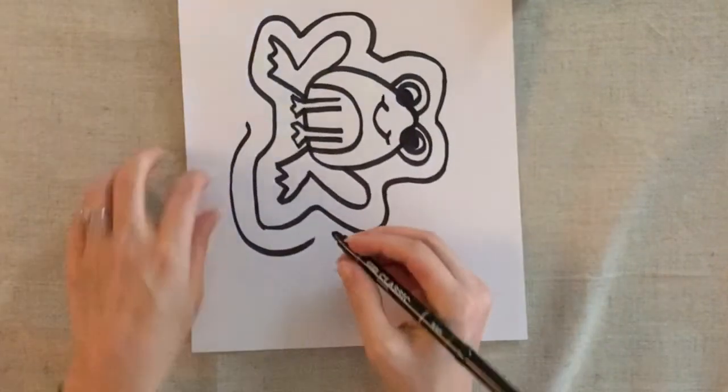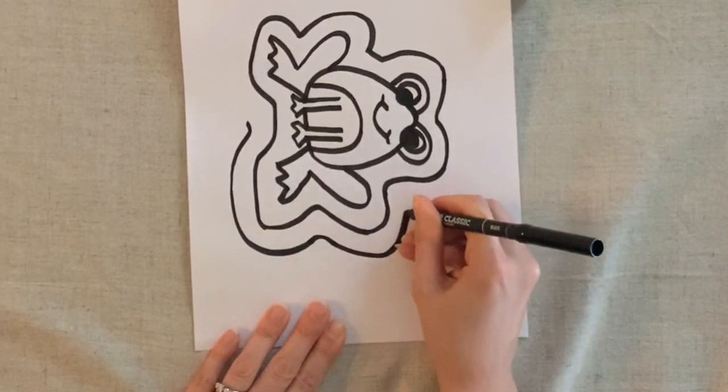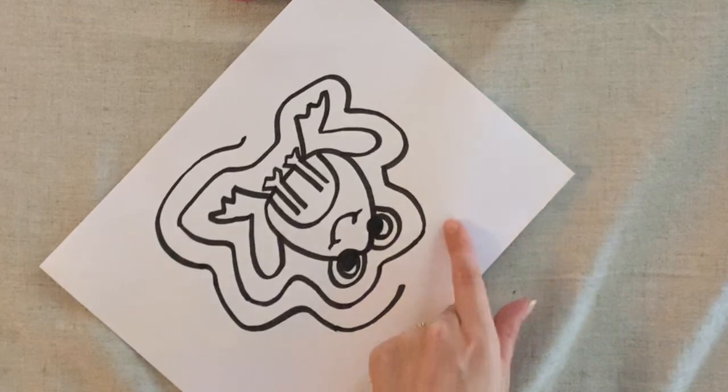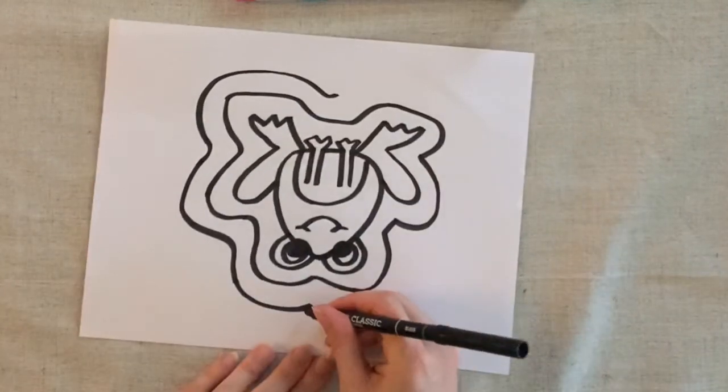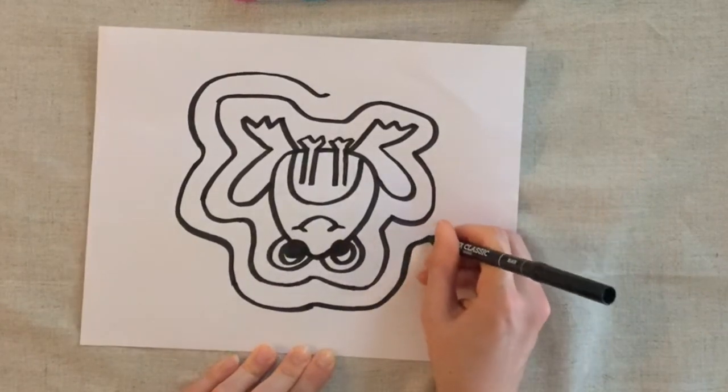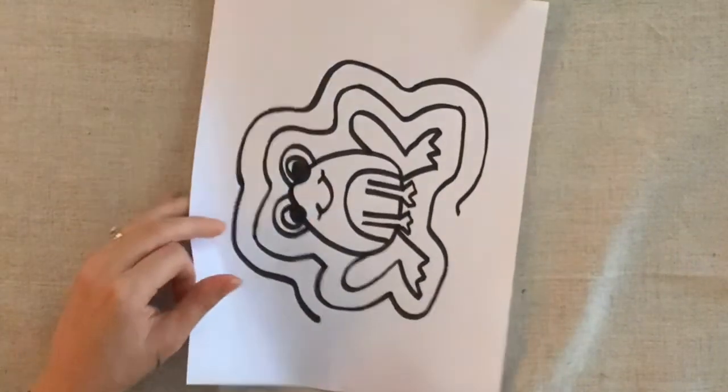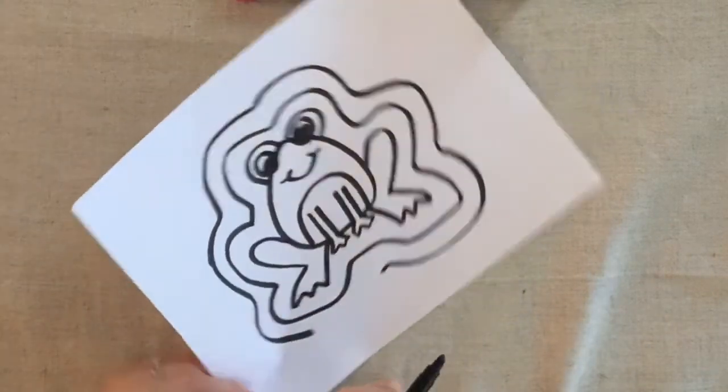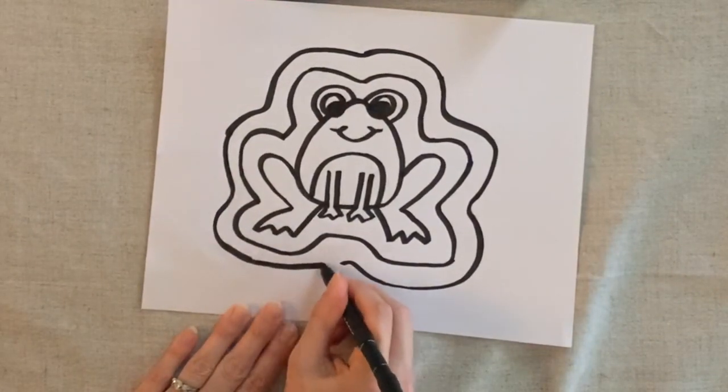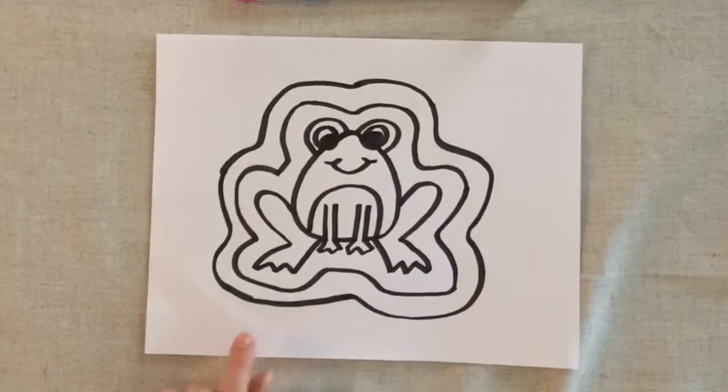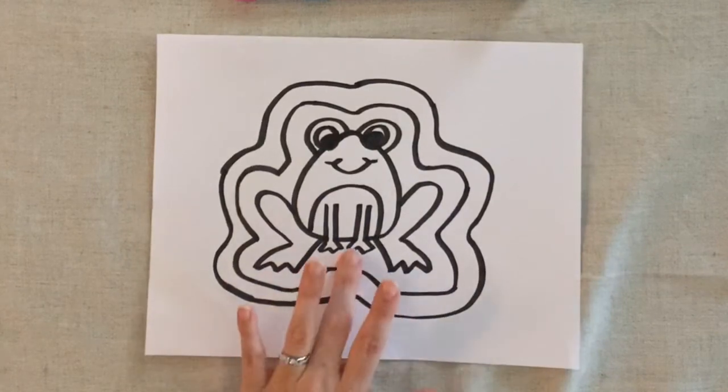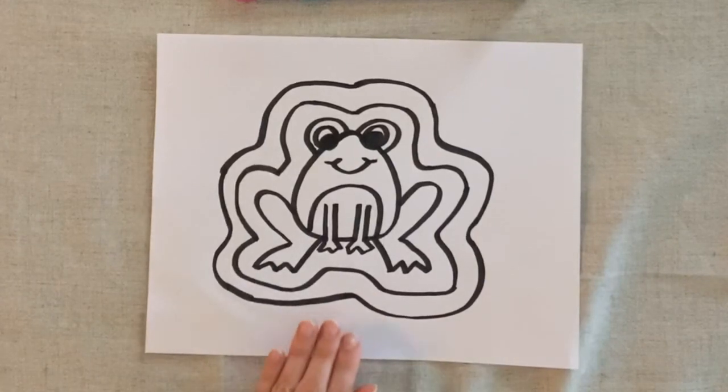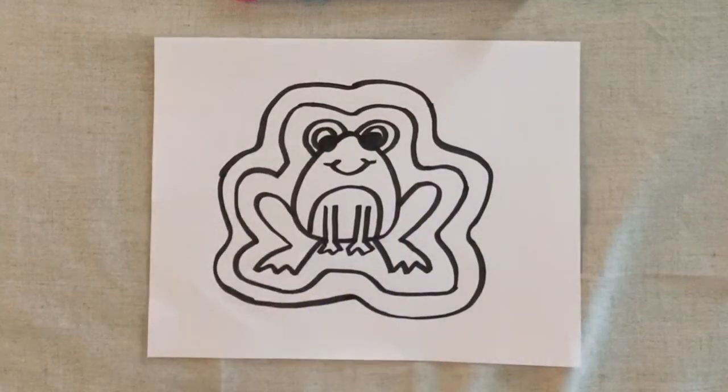So now I'm adding a second layer, another line. Think of it like that bubble line. And I'm following the same shape that I've had drawn before. And I'm just leaving some room between my line and the frog. Doesn't have to be perfect. All right, now I have my frog layer one and layer two. I'm going to do three layers total. I need to add one more bubble layer around my frog.